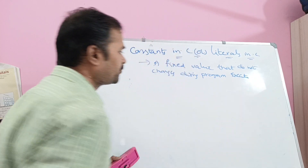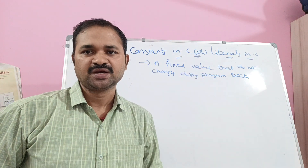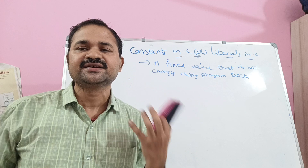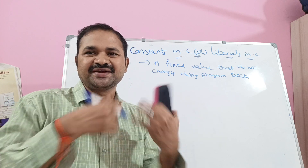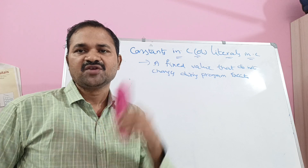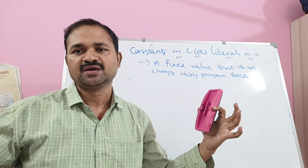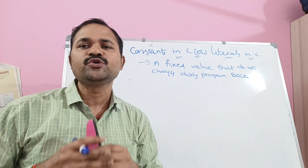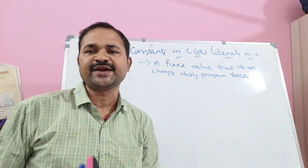If we change the value of a constant, then the compiler will give an error message. That is the major difference between a variable and a constant. A variable value can change in the program, but constants cannot change during execution of a program.